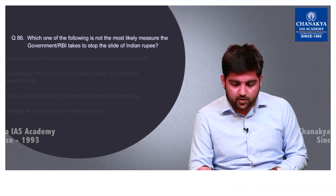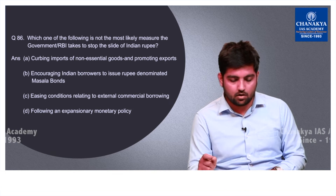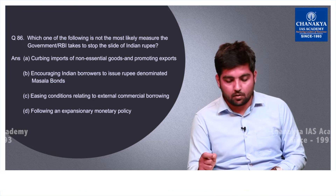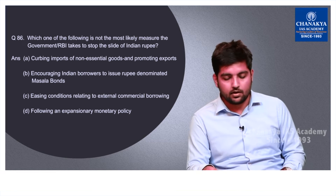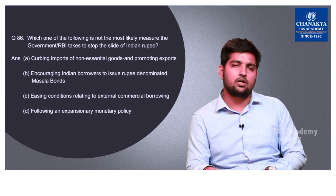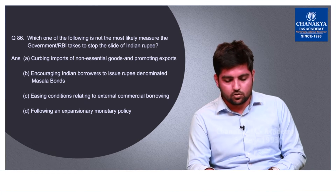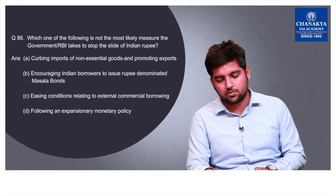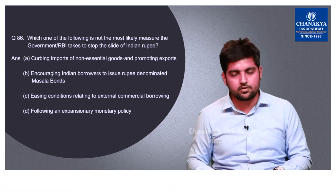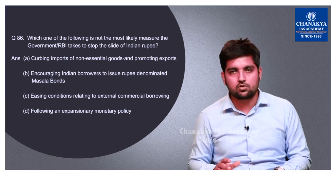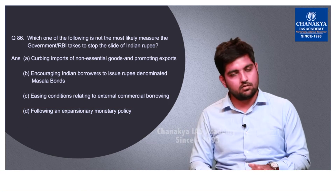Question number 86 asks which is not a likely measure the government or RBI takes to stop the slide of the Indian rupee. If you are familiar with basics of the Indian economy, this is a simple question. Following an expansionary monetary policy would infuse more rupees into the market, which is counterproductive for the rupee. So the correct answer is D.